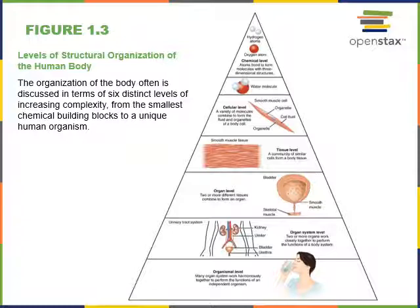There are many different types of cells, and cells together form tissues. The next level is the tissue level, where similar cells are grouped together to perform a common function. We can see the example of smooth muscle tissue, where multiple smooth muscle cells together form tissue that can contract to control the size of an organ. For example, the wall of the urinary bladder contains smooth muscle called the detrusor muscle, which contracts when we urinate.